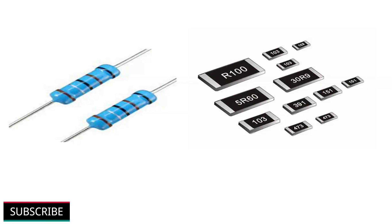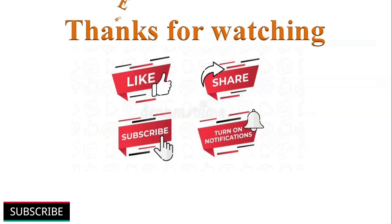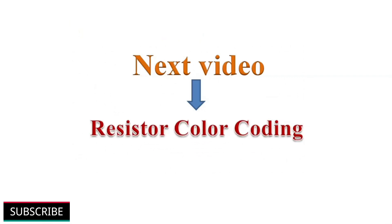In the next video, we will discuss about how to find out the resistance value of a resistor with the help of color code or code written on them. Thanks for watching this video. If you like this video, please click the like button. Help others to learn by sharing this video. Please subscribe my YouTube channel and turn on notifications for more such videos. My next video is about resistor color coding. Have a nice day.